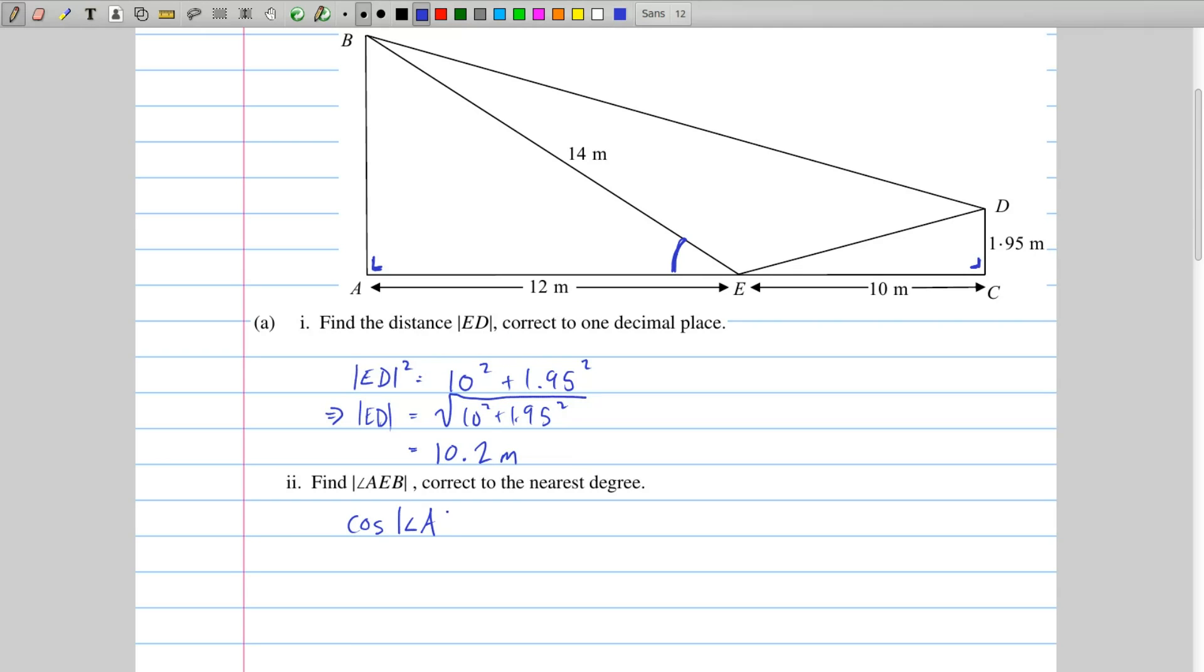Cosine of AEB is given by the adjacent side, which is 12, divided by the hypotenuse, which is 14. So to get angle AEB on its own, you have to undo this cosine, you bring the cosine over to the other side, and you get arc cos, or cosine inverse, of 12 over 14, and that turns out to be 31 degrees, correct to the nearest degree.